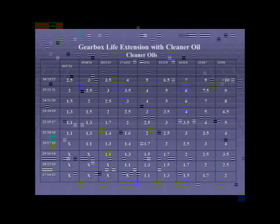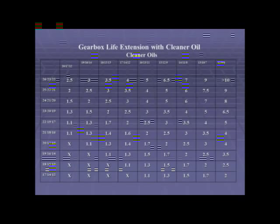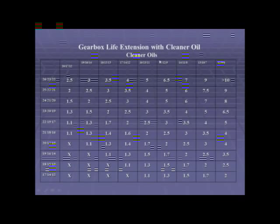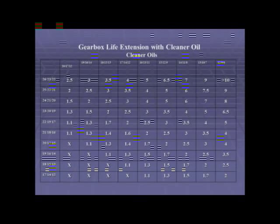Here's a chart for gearbox life extension. ISO cleanliness codes in the 22-23 or 22-21 range are what I find in a lot of plant equipment, stored oils, and containers. If we clean our oil up to an area corresponding to 10-micron absolute filtration, we can add 2.5 to 3 times the life of the gearbox. For bearings — journal bearings and roller bearings — some numbers go up to 6, 7, or 8 times the life of individual bearing components. Let me know if you'd like those charts.